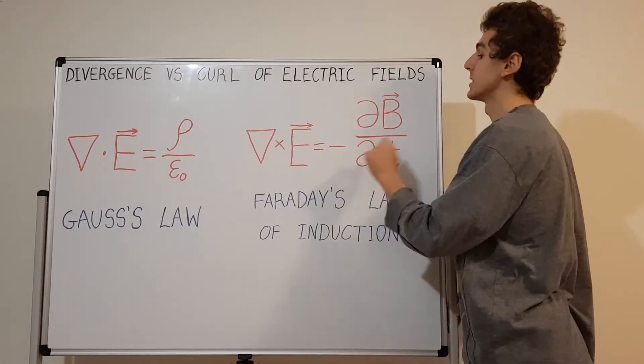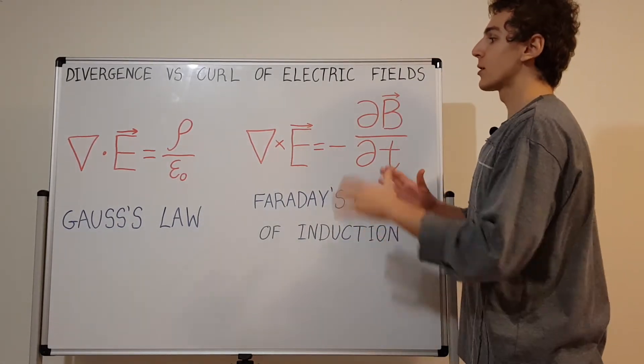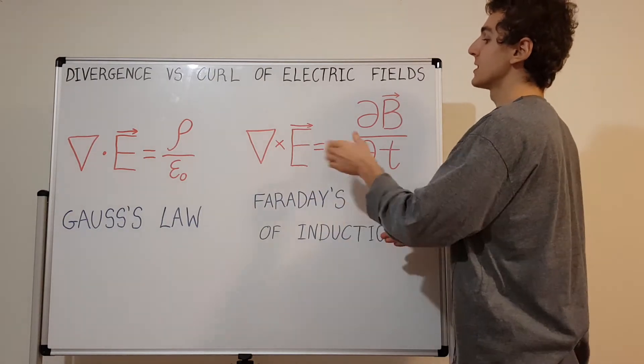Lenz's law tells you the direction of this circulation. Let's compare and contrast some aspects between the divergence and the curl.